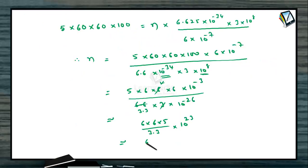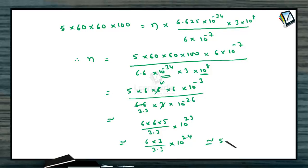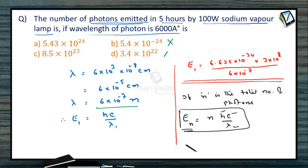Taking 6 × 3 divided by nearly 3.3, this 30 will contribute 10²⁴. So 18 divided by approximately 3.3 comes out to be 5.43 × 10²⁴. Looking at the options: A is 5.4 × 10²³, B is 8.5 × 10²³, 10²⁴ is needed, and 10²² is too small. Therefore, the answer is option A.